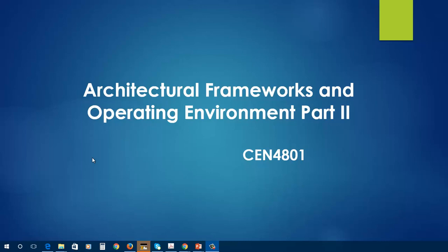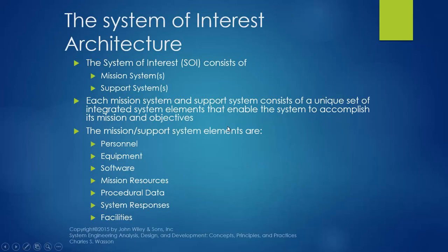Hello, welcome to CN4801. In this session, we'll continue talking about the architectural frameworks and the operating environment. The system of interest usually consists of mission systems and support systems. Each mission system and support system consists of a unique set of integrated system elements that enable the system to accomplish its mission and objectives. We are going to address some of the different elements that might be included in the system, as a general look at the system model or representation. Not all models will have the same elements, but those are the common support elements or mission elements that will exist in the system.